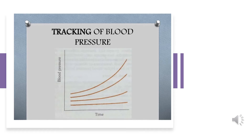A graph showing the tracking phenomenon illustrates that blood pressure initially on the lower side continues to remain low over time, while blood pressure on the higher side not only continues that trend but becomes even higher with advancing age. This periodic tracking can give us clues about which individuals may later develop hypertension, allowing us to focus on preventive strategies much earlier in their lives, before signs and symptoms of hypertension appear.